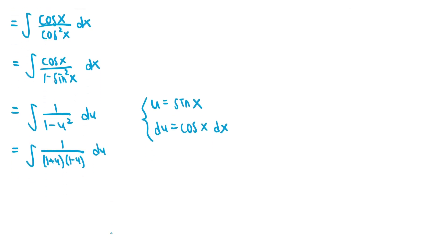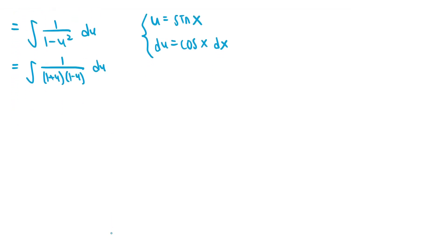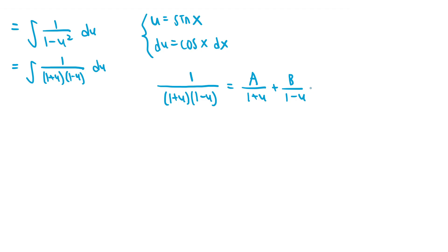The next thing we should do is to use partial fractions to split this into a sum of two smaller fractions with a linear denominator. Since the denominator has two distinct linear factors, 1 plus u and 1 minus u, we should let 1 over 1 plus u times 1 minus u equal A over 1 plus u plus B over 1 minus u, where A and B are constant terms. That's how you do partial fractions when there are two distinct linear factors in the denominator — the fraction is rewritten as a sum of two fractions, each with one linear factor in the denominator and an unknown constant as the numerator.